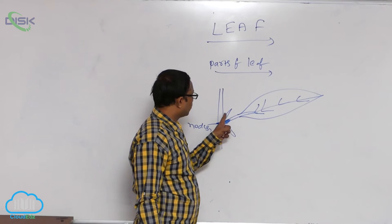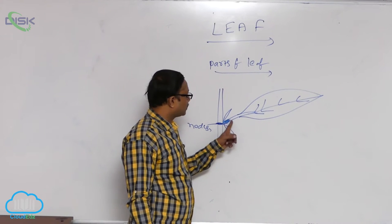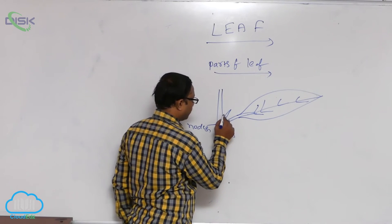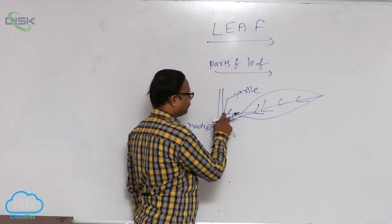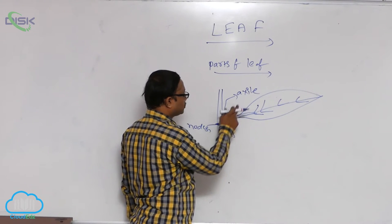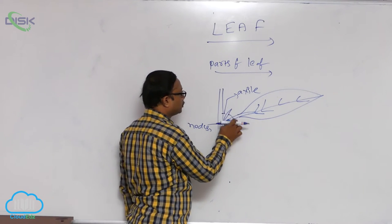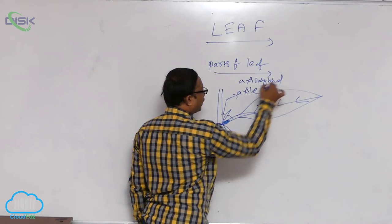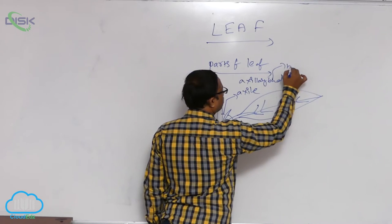Each leaf has an axil. The upper angle between the leaf and the stem is known as the axil. The axil produces an axillary bud, and this axillary bud produces a branch.